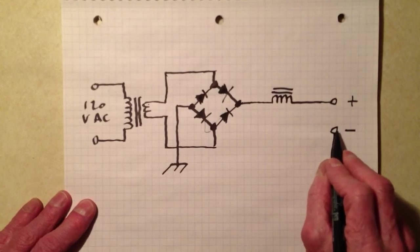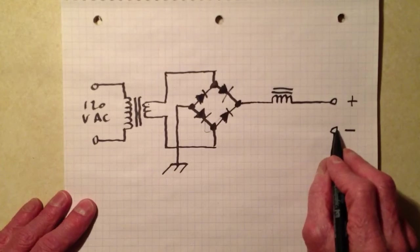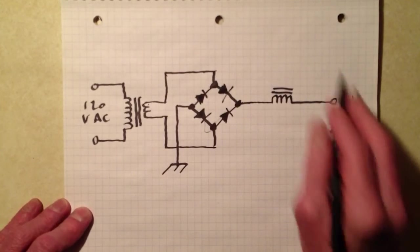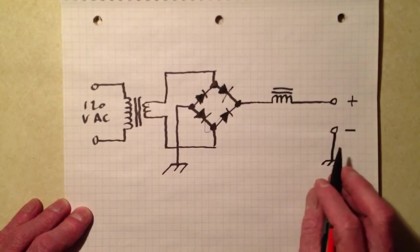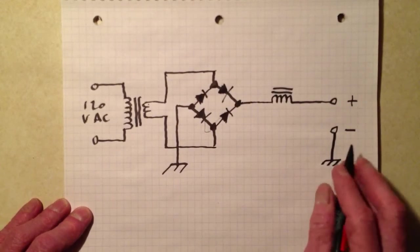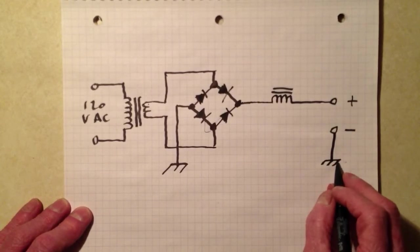Chassis ground symbols right here. Presumably, this supply is built on an aluminum chassis. If it's not, if it's on a circuit board, then you would have foil runs, probably going around the outside of the circuit board, that would all represent this chassis ground.